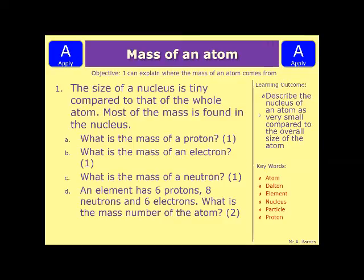And then D, an element has 6 protons, 8 neutrons and 6 electrons. What is the mass number of the atom? So pause the video, have a think, have a go at it and then we'll see if you're right.